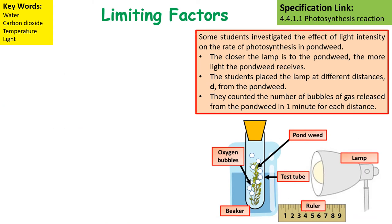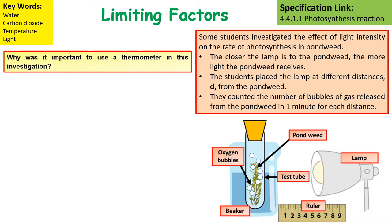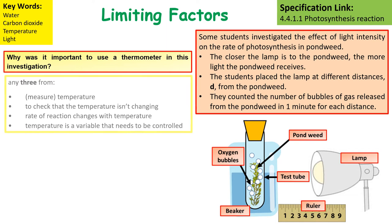Some students investigated the effect of light intensity on the rate of photosynthesis in pondweed. The closer the lamp is to the pondweed, the more light the pondweed receives. The students placed the lamp at different distances from the pondweed and counted the number of bubbles of gas released in one minute at each distance. It's important to use a thermometer in this investigation to check that the temperature isn't changing, as temperature is a control variable that needs to stay constant.